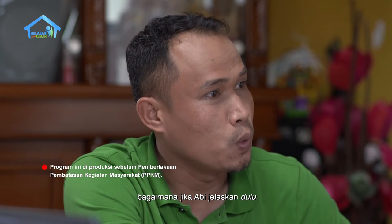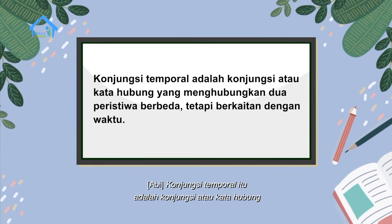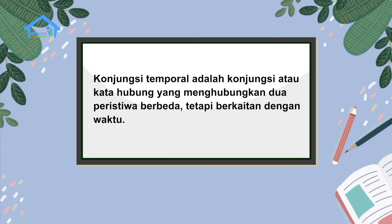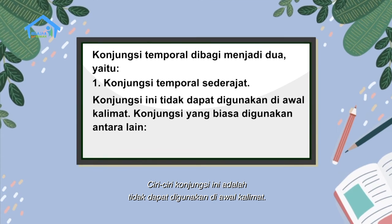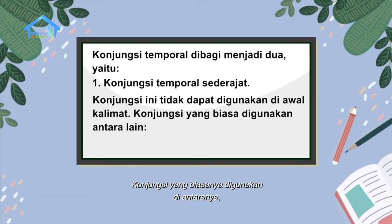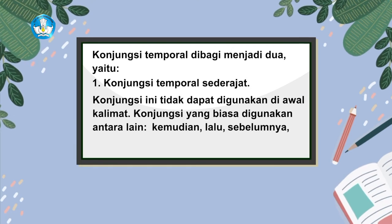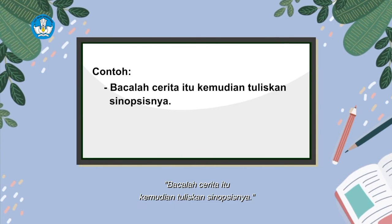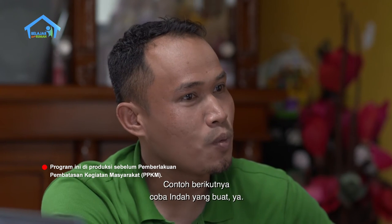Sebelum kamu menulis ceritanya, Abi jelaskan dulu tentang konjungsi temporal sederajat dan tidak sederajat yang bisa kamu gunakan dalam bercerita nanti. Konjungsi temporal itu adalah konjungsi atau kata hubung yang menghubungkan dua peristiwa berbeda tapi berkaitan dengan waktu. Konjungsi temporal dibagi menjadi dua. Yang pertama, konjungsi temporal sederajat. Ciri-cirinya adalah tidak dapat digunakan di awal kalimat. Konjungsi yang biasanya digunakan di antaranya: kemudian, lalu, sebelumnya, dan sesudahnya. Contoh: bacalah cerita itu, kemudian tuliskan sinopsisnya.